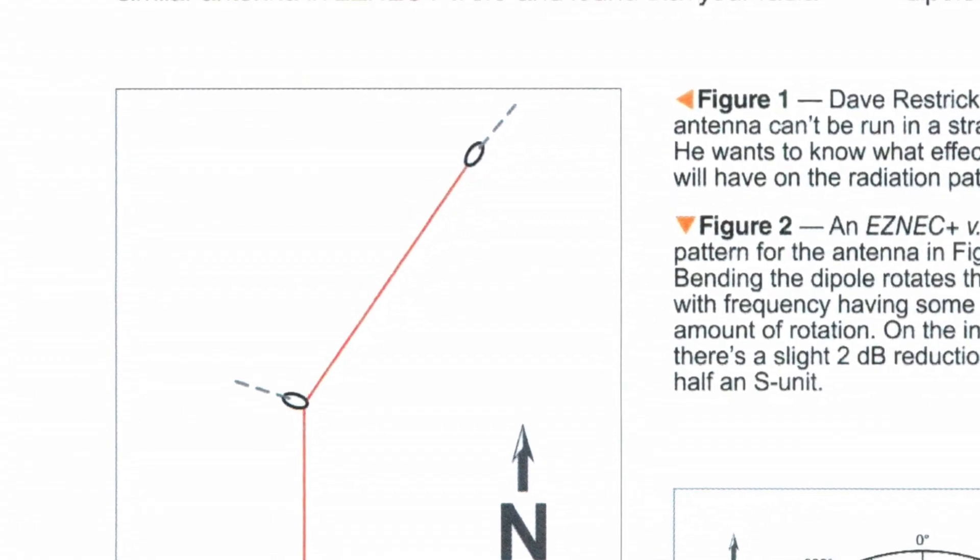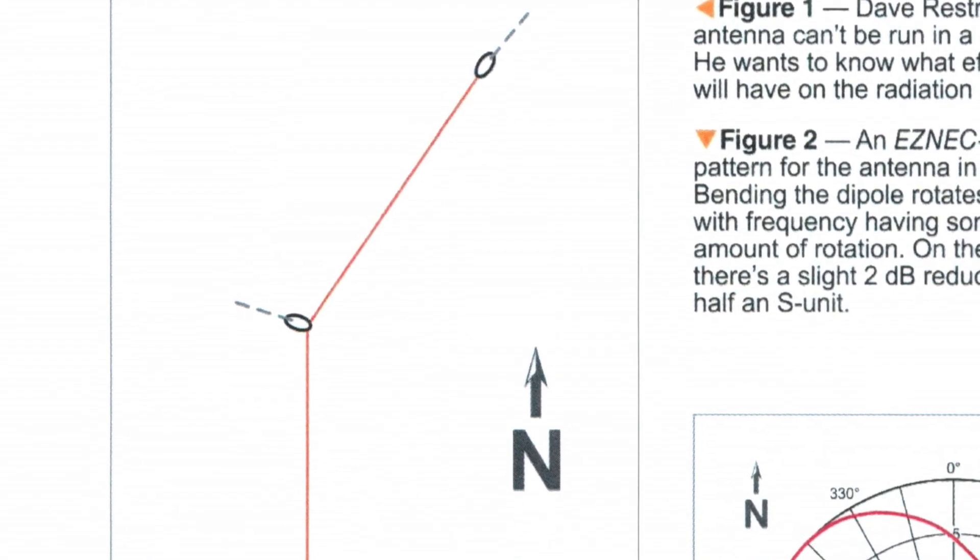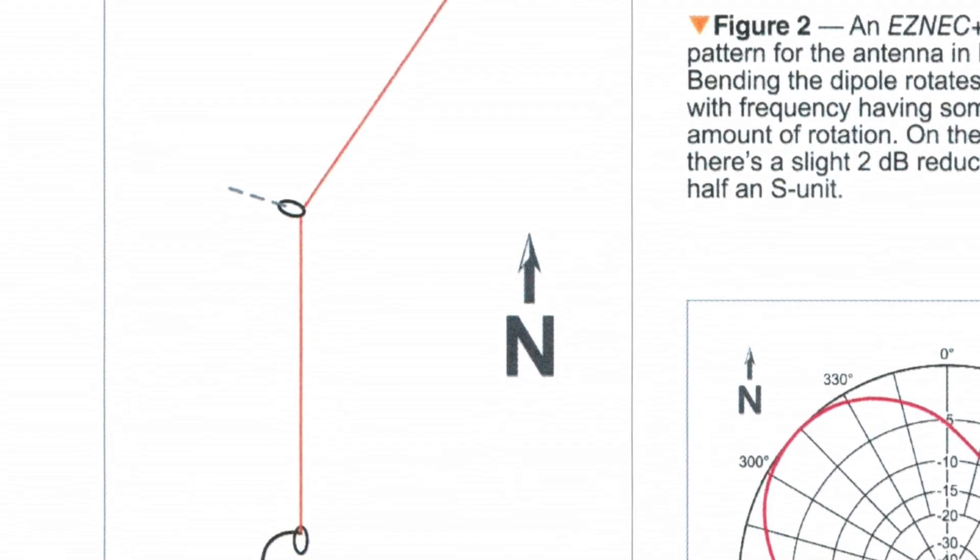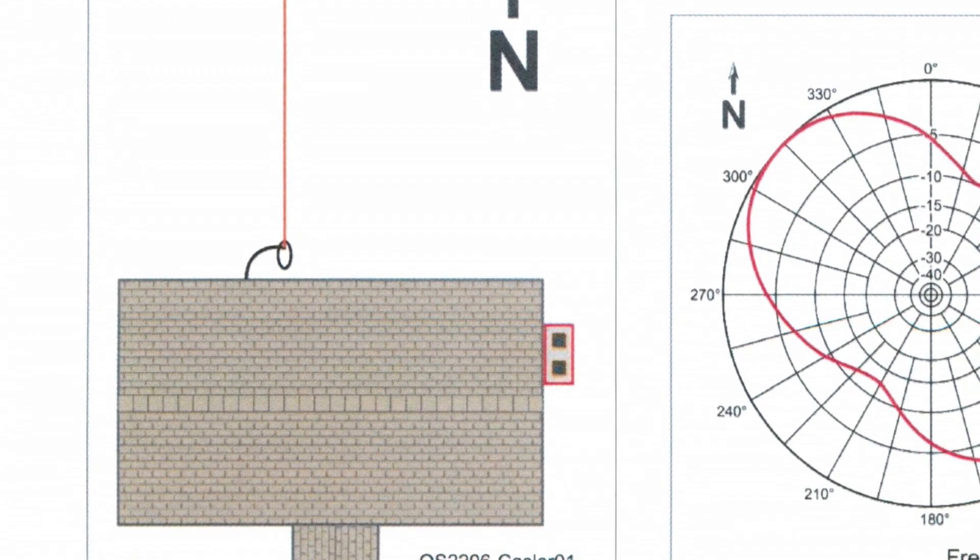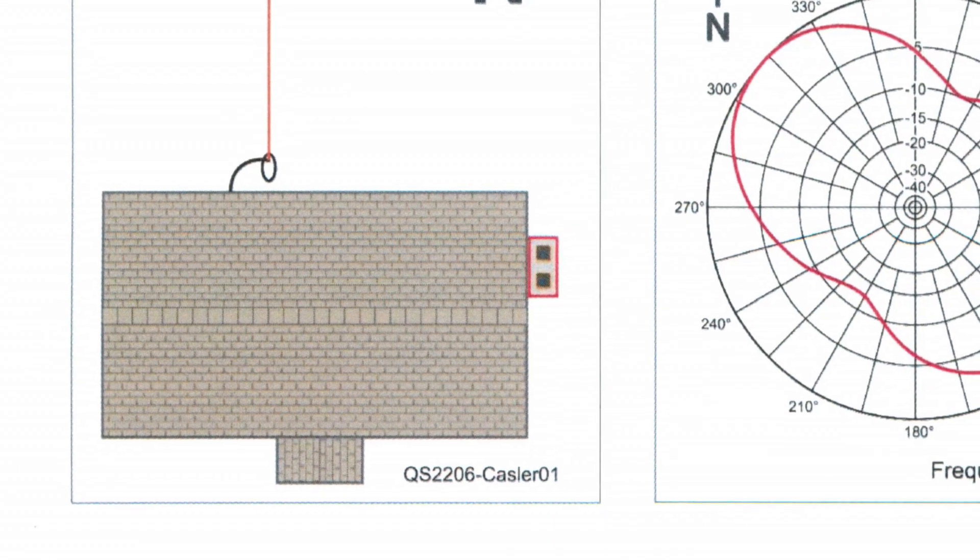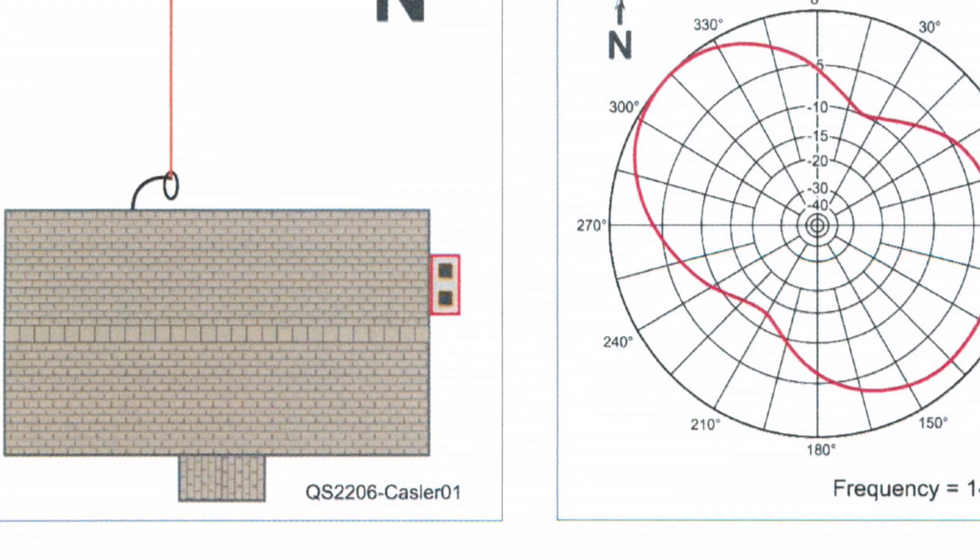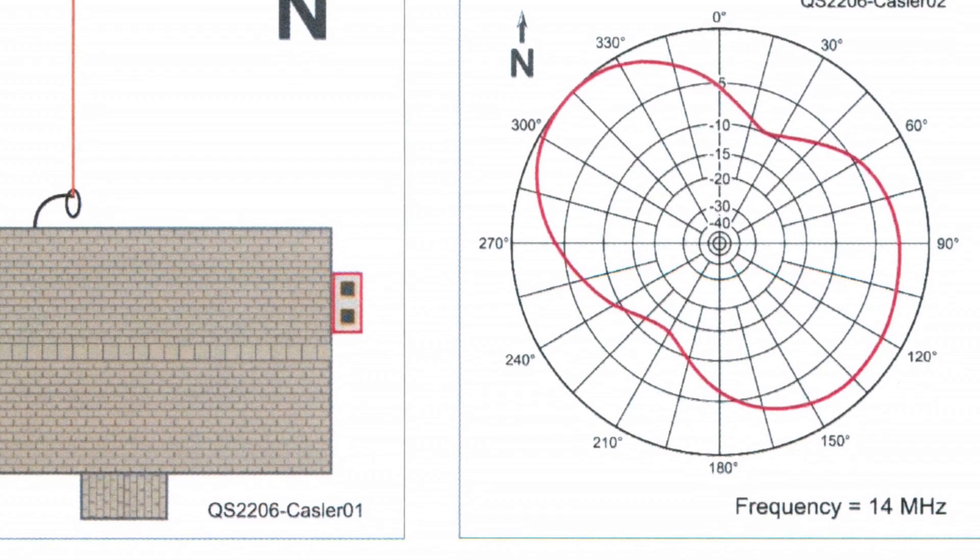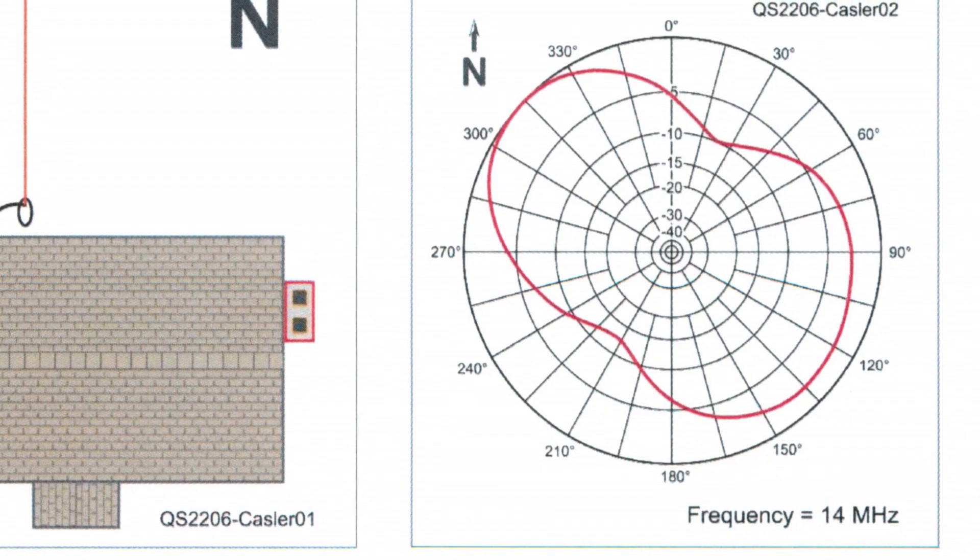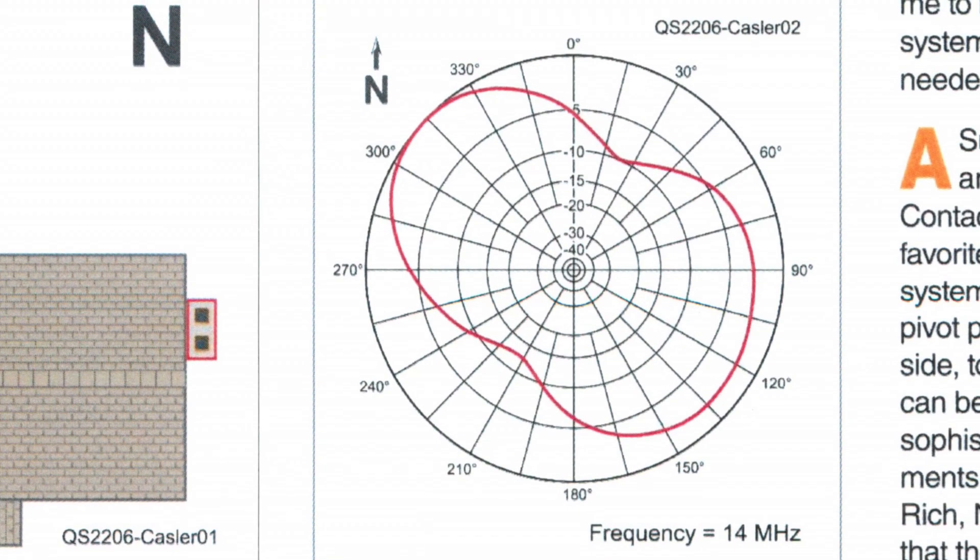In that column, Dave Restrick, W1DWR, asks what happens to a dipole's pattern if you bend the dipole? And I've got the answer there. You can see that it bends the pattern somewhat. It's not quite symmetric. So I thought what I'd do is take this sort to an extreme. We're going to bend the dipole 90 degrees and feed it at the 90 degree point. So let's take a look.